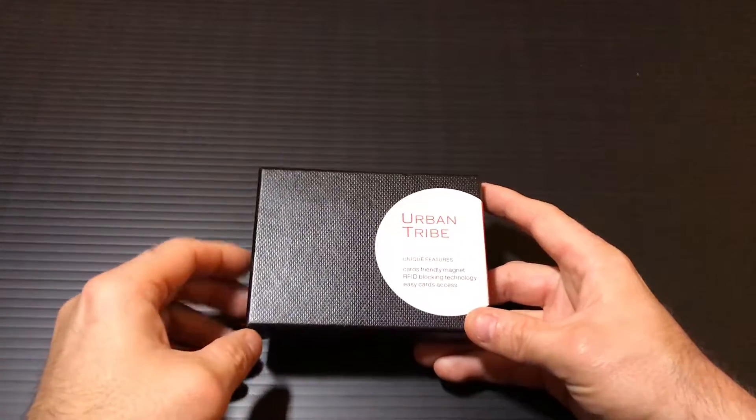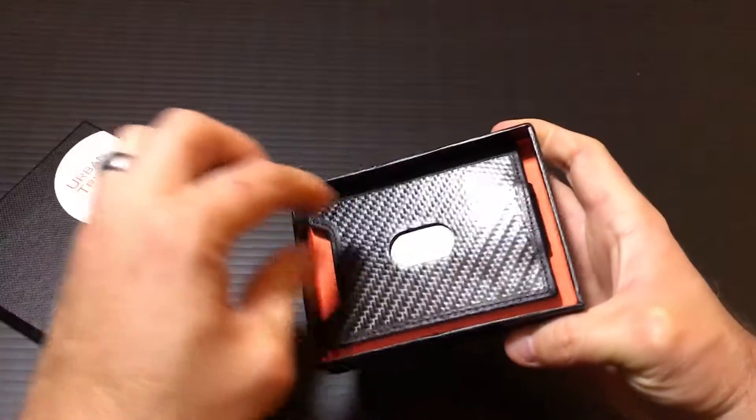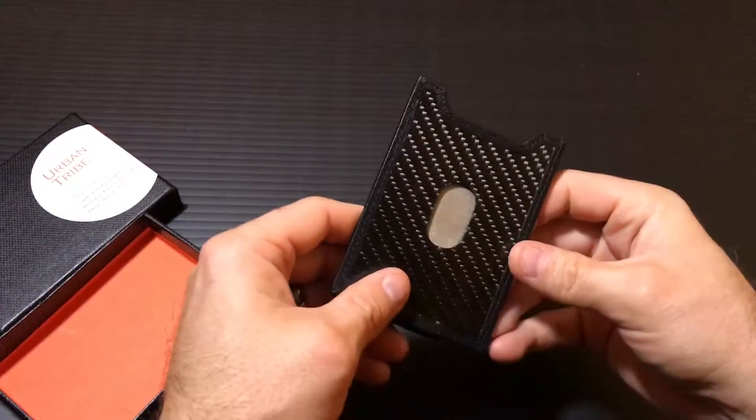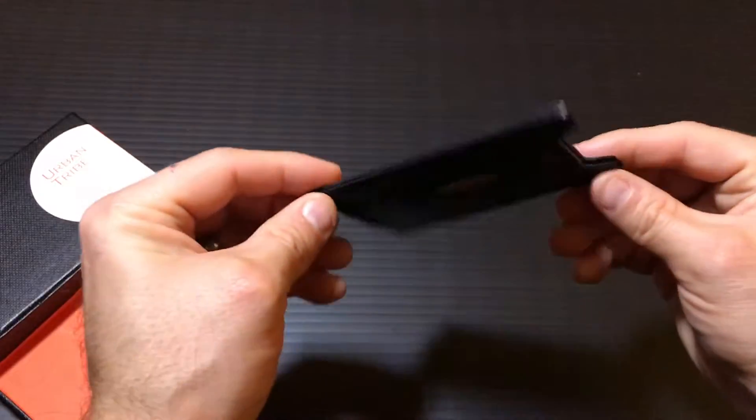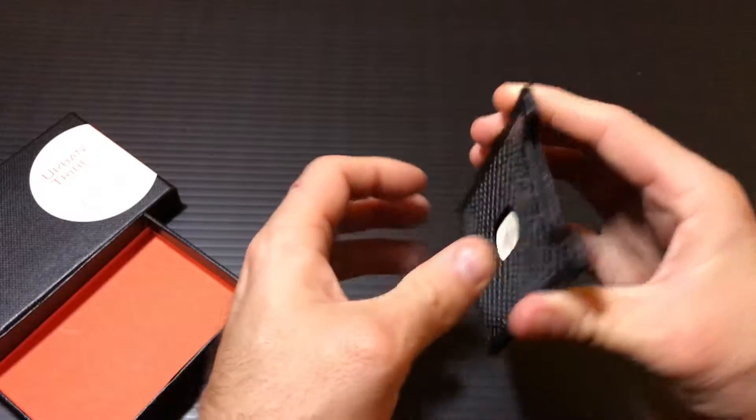Here we have the carbon fiber minimalist wallet by Urban Tribe which comes in a nice little gift box. It has been constructed from two pieces of carbon fiber sewn together for this card holder portion and it has an integrated magnet money clip which I believe is leather.